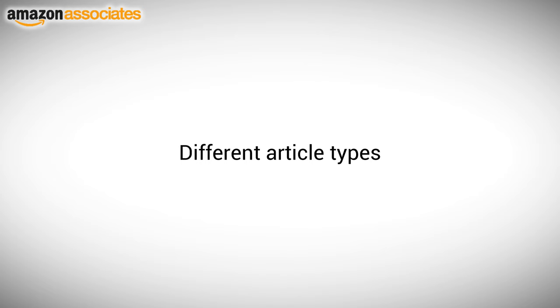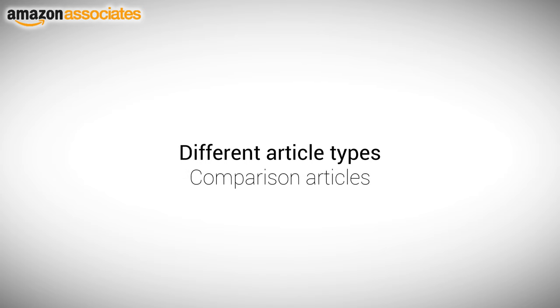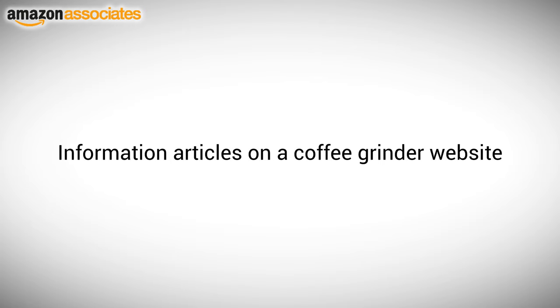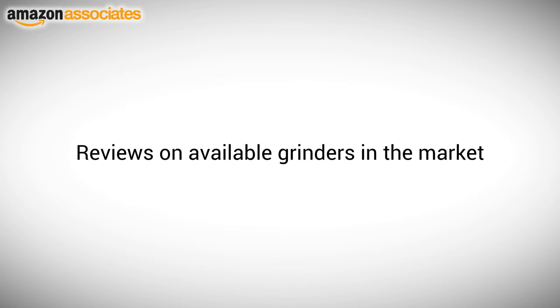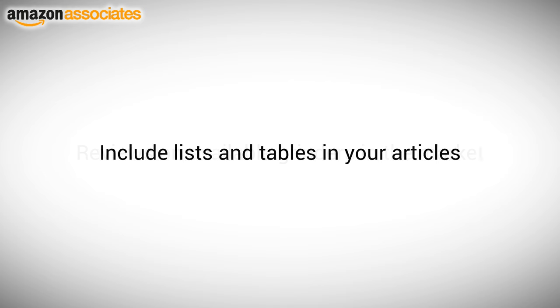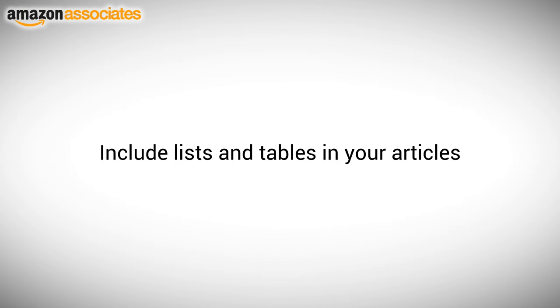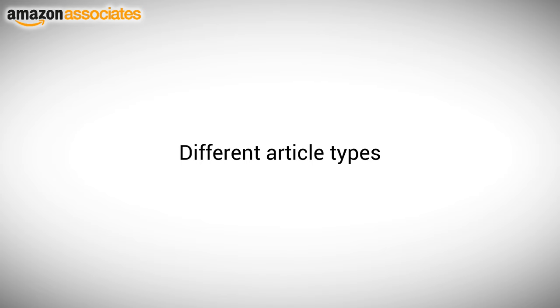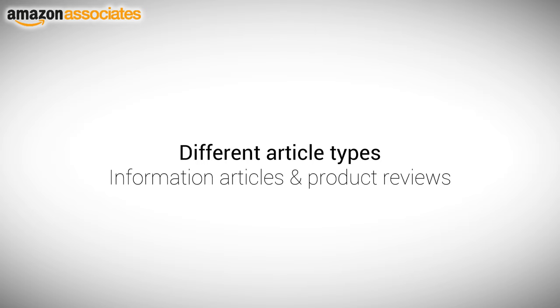Always use a variety of content. There are different types of articles that you can write. Here are some examples: information articles, product review articles, comparison articles, news articles, tutorials, and opinions. For a coffee grinder website, you can write information articles such as how to use a French press or how to use a manual grinder. You can also write product reviews on the various grinders available in the market, and include lists and tables in your articles as these additional features are great content to have on your website.